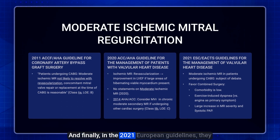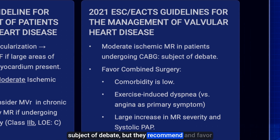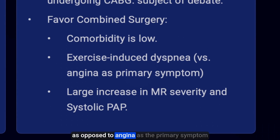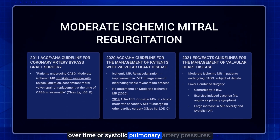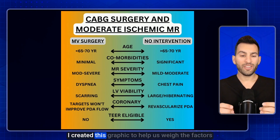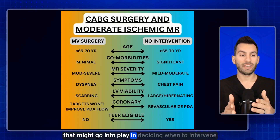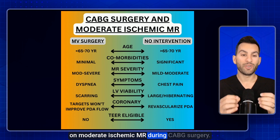In the 2021 European guidelines, they acknowledge it is a subject of debate but recommend and favor combined surgery when patient comorbidity is low, if the patient has exercise-induced dyspnea as the primary symptom rather than angina, and if there is a large increase in MR severity over time or elevated systolic pulmonary artery pressures. I created a graphic to help weigh the factors that go into deciding when to intervene on moderate ischemic MR during CABG surgery.